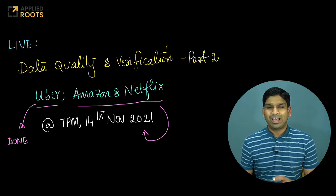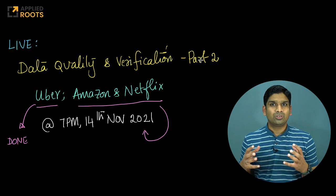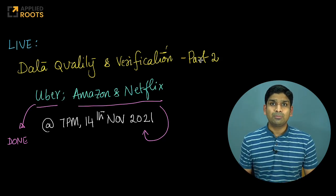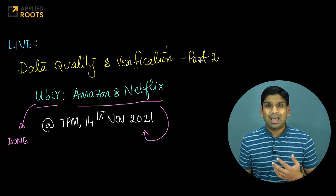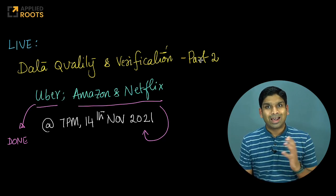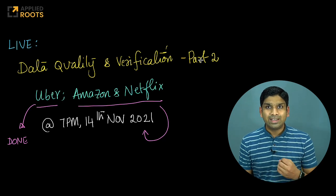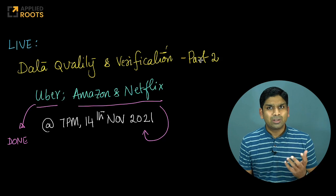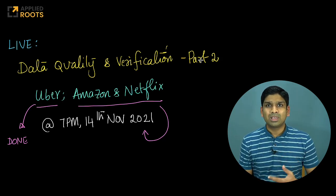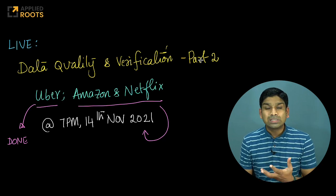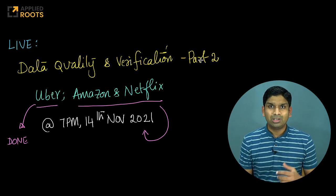We have actually started the discussion of actual data quality and monitoring and verification systems that are built at companies like Uber, Amazon and Netflix. In the previous week, we completed the whole architecture, internal details, and algorithmic specifics of the system that was built at Uber just about a year ago. This is primarily available from their research publications, open source tools that they have built, and equally importantly, their engineering blog.